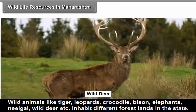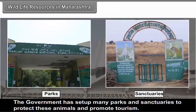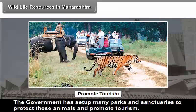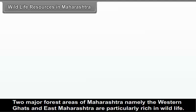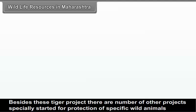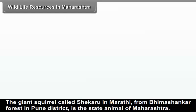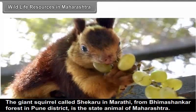The government has set up many parks and sanctuaries to protect these animals and promote tourism. Two major forest areas of Maharashtra — namely the Western Ghats and East Maharashtra — are particularly rich in wildlife. There are four tiger projects in the state: Melghat, Tadoba, Pench and Sahyadri. Besides these tiger projects, there are a number of other projects specially started for the protection of specific wild animals. For example, Dajipur in Kolhapur district is particularly a reserve for bison. The giant squirrel called Shekru in Marathi, from Bhimashankar forest in Pune district, is the state animal of Maharashtra.